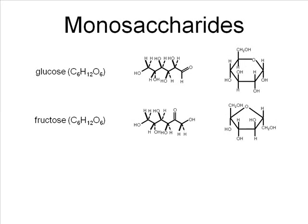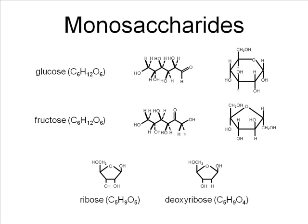A good example of this involves the monosaccharides ribose and deoxyribose, which are used to build more complex organic molecules called nucleic acids, which are used in information storage, as we'll see in just a few videos. Notice the difference between ribose, used in RNA, and deoxyribose, used in DNA, is one hydroxyl group versus one hydrogen.